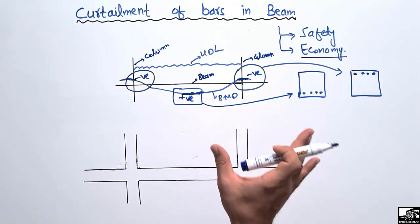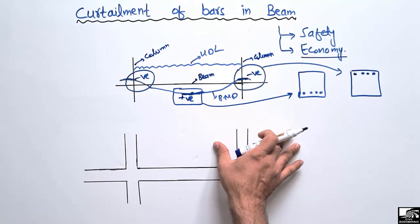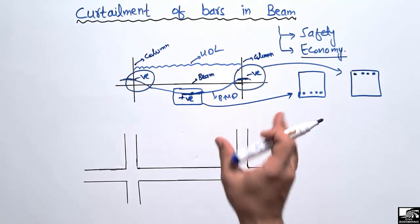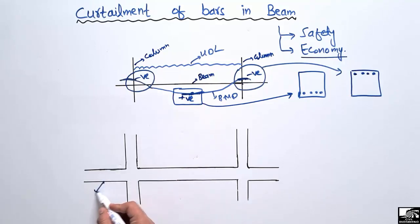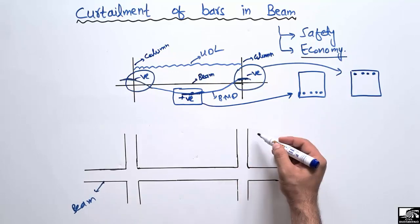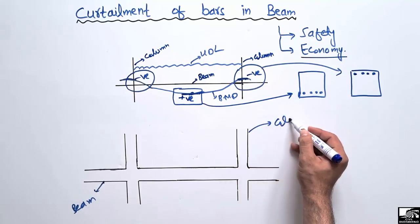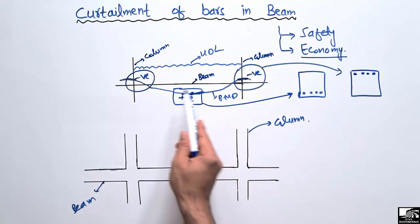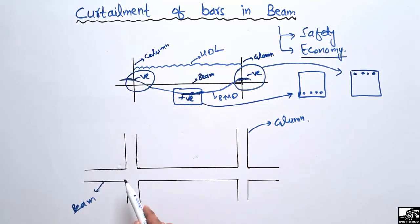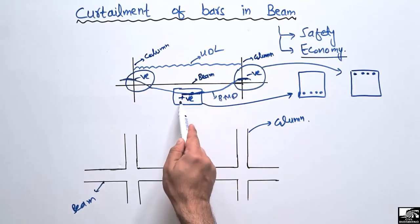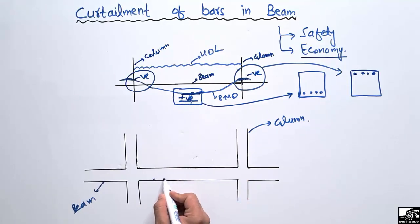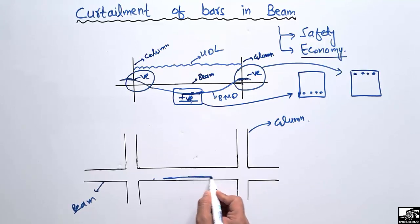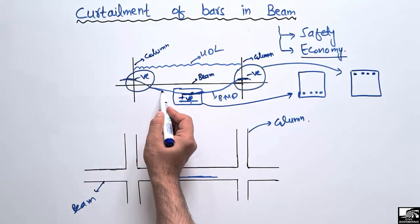Now, how do we curtail or cut the steel bars in the beam section in order to make an economical beam section? Looking at this beam in detail — because of the highest bending moment at the mid-section, we provide the steel bar here. But here at the end portions, we can see the positive bending moment is maximum at the center and then decreasing toward the supports.